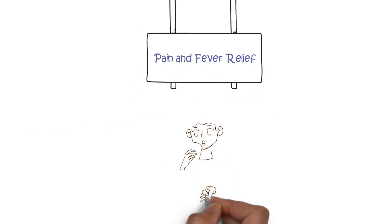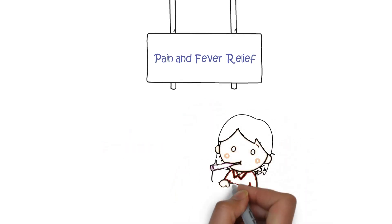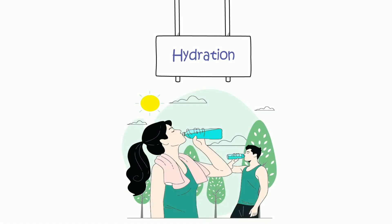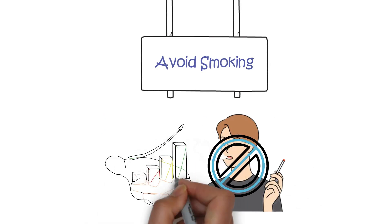Pain and fever relief: Over-the-counter pain relievers such as paracetamol and ibuprofen can lower fever and alleviate aches and pains. Hydration: Drinking ample fluids is essential to prevent dehydration. Avoid smoking: Refrain from smoking, as it can exacerbate symptoms.